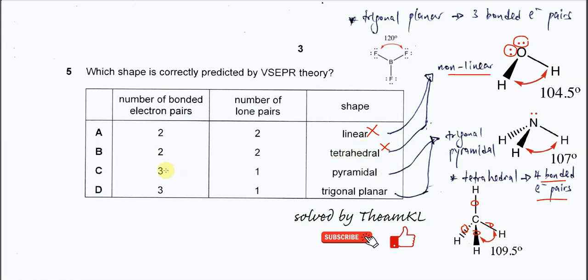For C, it has three bonding pairs and one lone pair. Three bonding pairs and one lone pair, the best example for you all is ammonia. So one lone pair on nitrogen and these three bonding pairs, one, two, three bonding pairs.